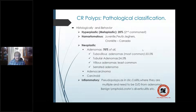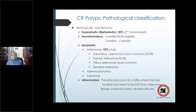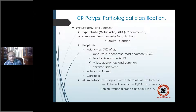Histologically and behavior-wise, polyps are classified as hyperplastic, hamartomatous, neoplastic, and inflammatory. Hyperplastic polyps, also known as metaplastic, are the second most common at 20%. The hamartomatous group includes juvenile polyps, Peutz-Jeghers, and Cronkite-Canada syndrome.